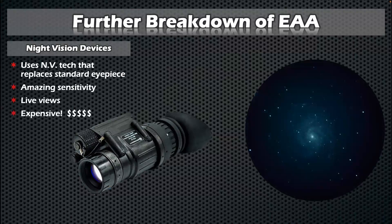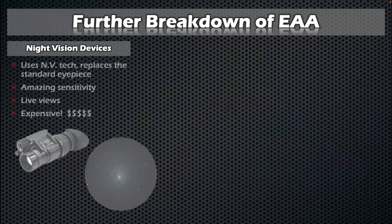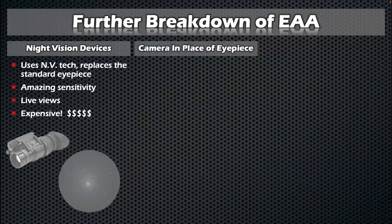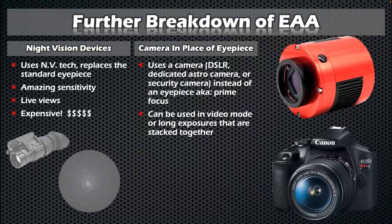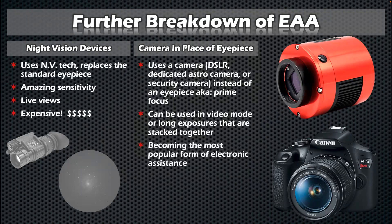I've looked through a 30-inch dob with a night vision device and it's breathtaking how much you can see — all just absolutely immediate, live views. It's awesome, but it is incredibly expensive. Then we jump over to a camera in place of an eyepiece: you can use a DSLR, a dedicated astronomy camera, or even a security camera. Again it's still in place of the eyepiece — at prime focus. You can use video mode with a DSLR or take longer exposures that you combine or stack together.